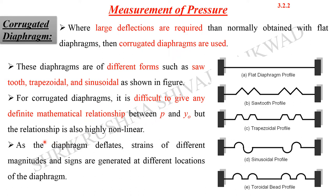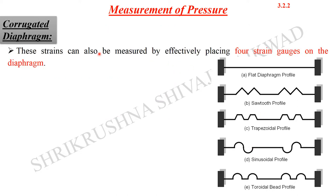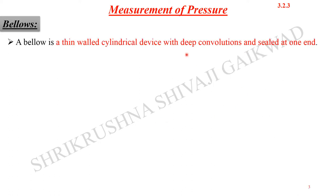As the diaphragm deflects, strains of different magnitudes and signs are generated at different locations of the diaphragm — both positive strains and negative strains can be produced. These strains can be measured by effectively placing four strain gauges at different locations on the diaphragm.